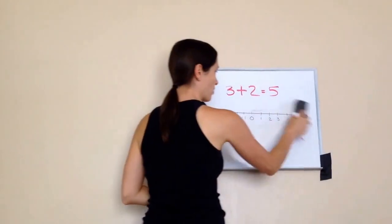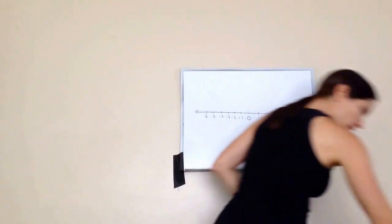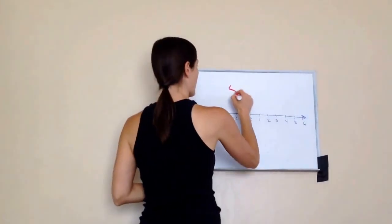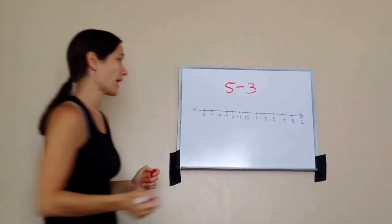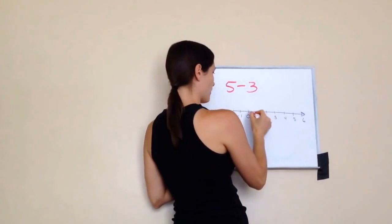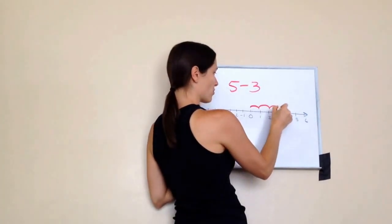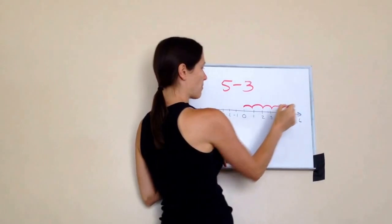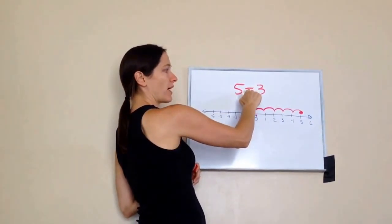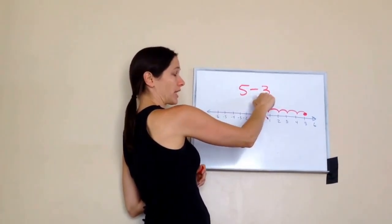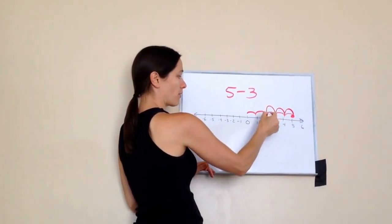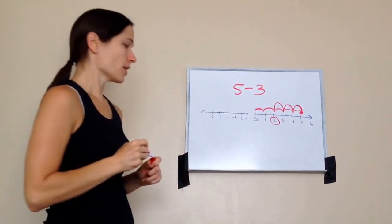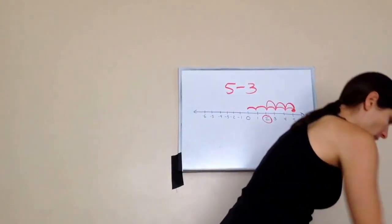Let's do a subtraction problem. 5 minus 3. Minus means take away. So if I go to 5, starting at my origin, 1, 2, 3, 4, 5. There's my point. And then they want me to take away 3 or go back 3. So I'm going to go back 1, 2, 3. And what is my answer? 2. So that's the easy way to do that.